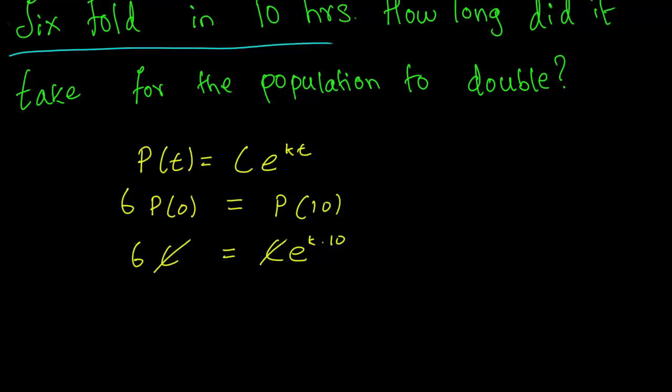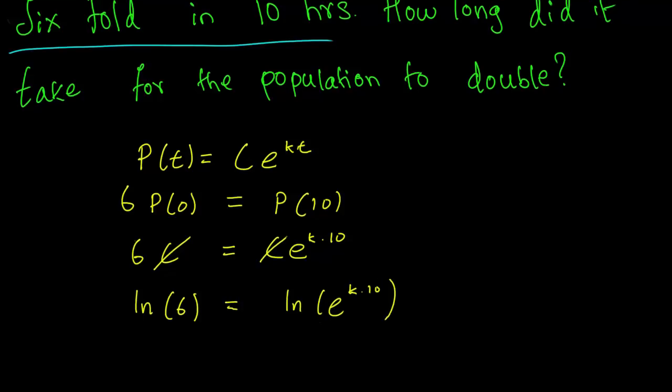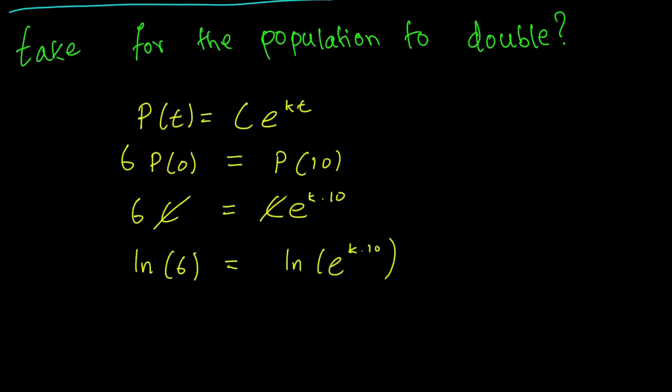So let's take the log of both sides. On the left-hand side, we will get log of 6. On the right-hand side, we will have log of e to the K times 10. And how log works is that the log of the exponential is an inverse, obviously. So we just are left with log of 6 equals K times 10.